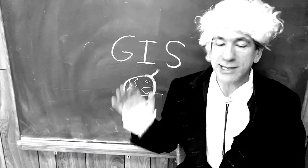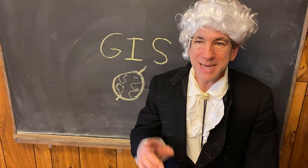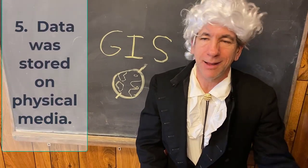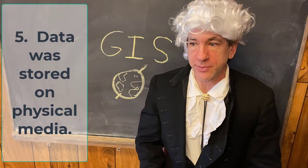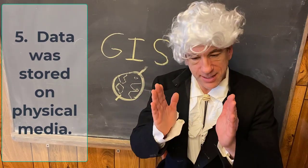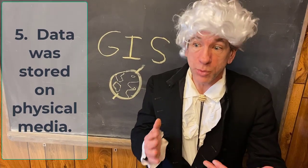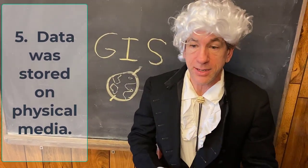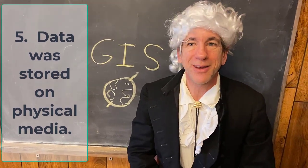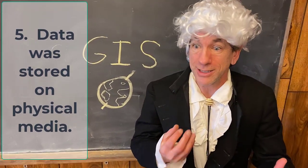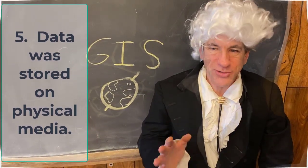Number five: in the early days of GIS, data came on physical media — analog reel-to-reel tapes in the very early days, then big floppy disks, then smaller floppy disks, then CD-ROMs, DVDs, hard drives, and eventually small drives we carried around our necks holding three gigabytes. But it was always physical media.